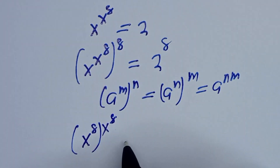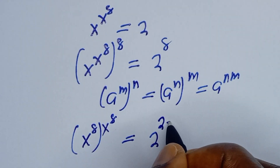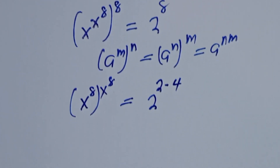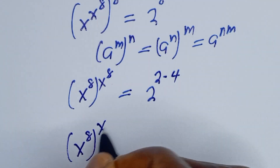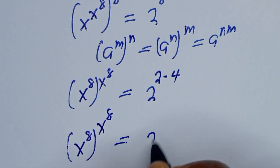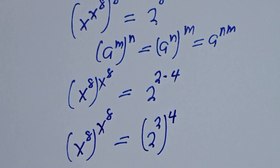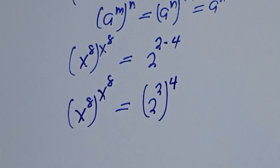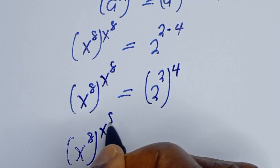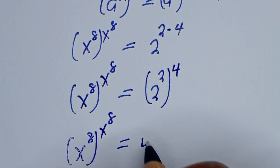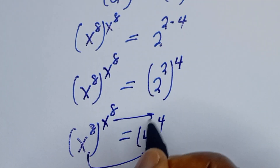Then this can be written as s to the power of 8 to the power of s to the power of 8, equal to 2 to the power of 2 multiplied by 4. So s to the power of 8 to the power of s to the power of 8 is equal to 2 to the power of 2 to the power of 4, which is 4 to the power of 4.